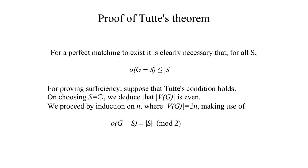where the number of vertices of G is 2N, making use of the obvious fact that the number of odd components of G minus S is congruent mod 2 to the cardinality of S, for every subset S of V. The case N equals 1 is trivial, so we proceed to the induction step.